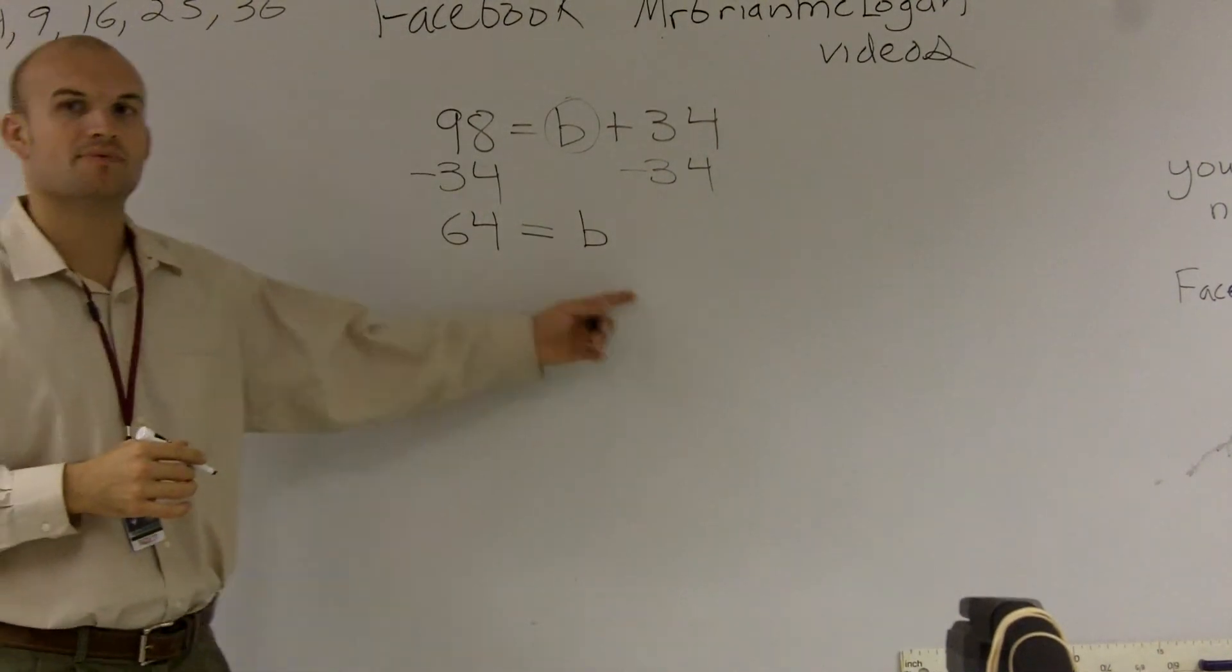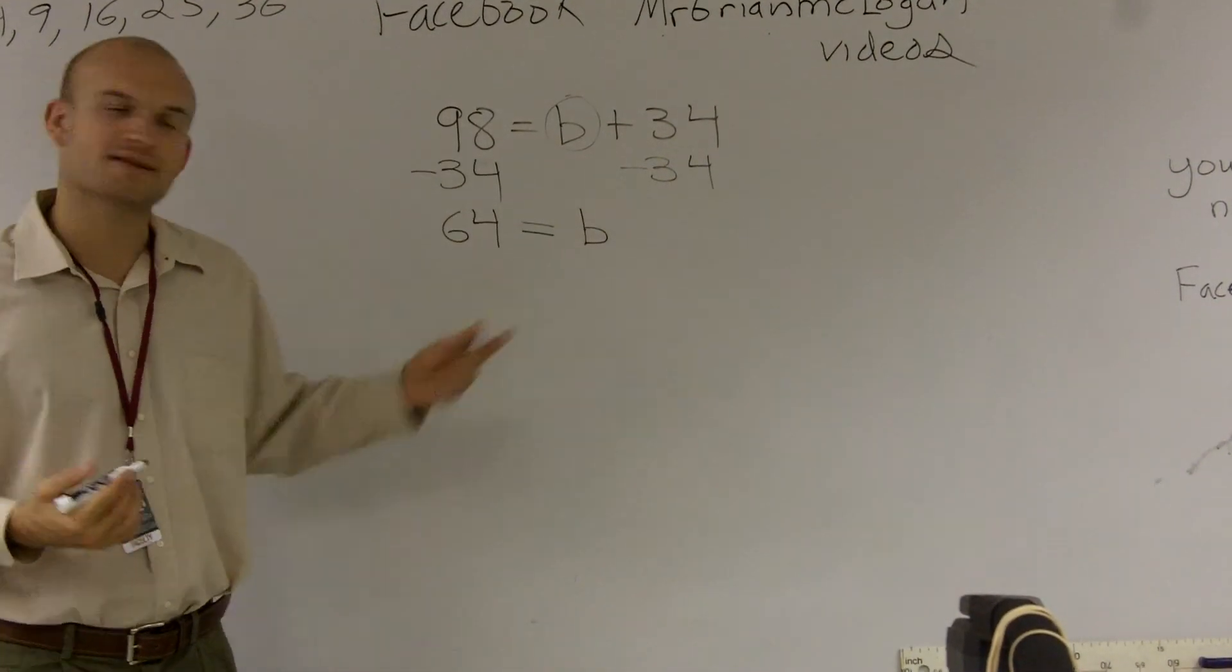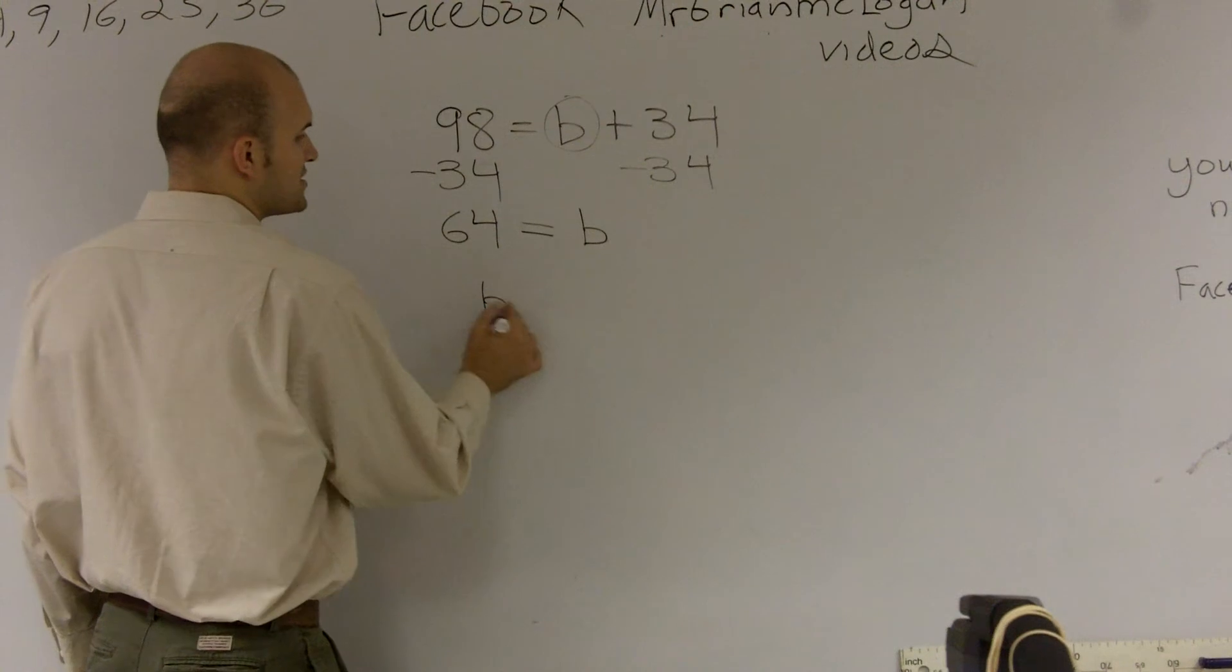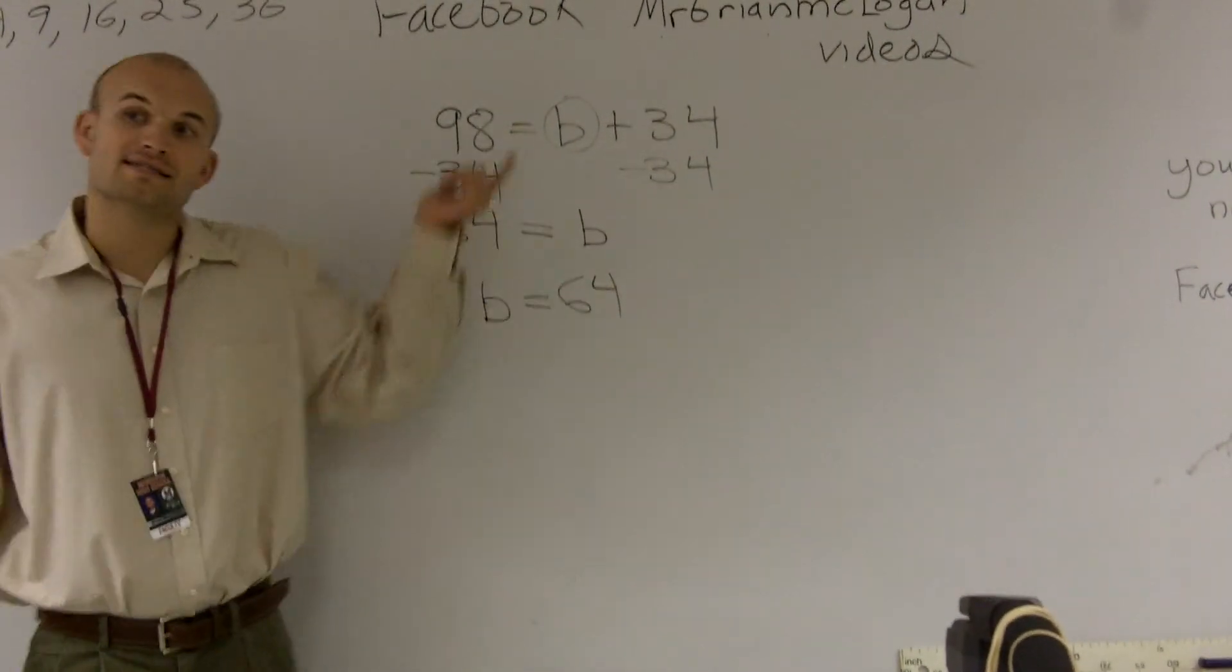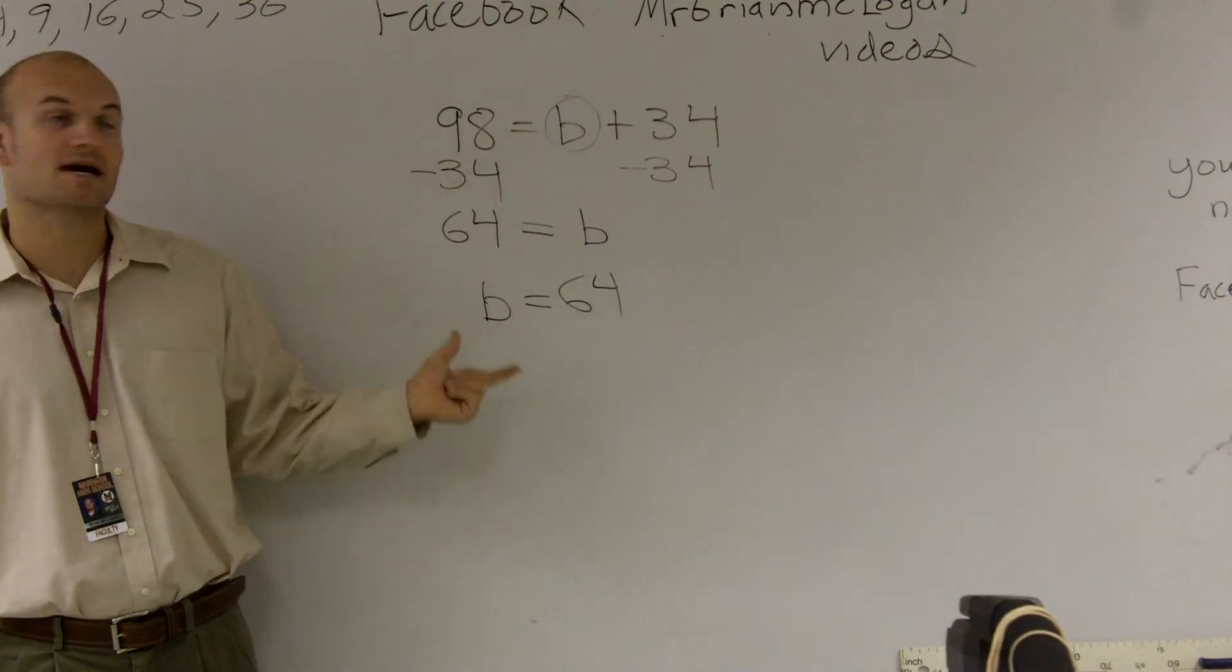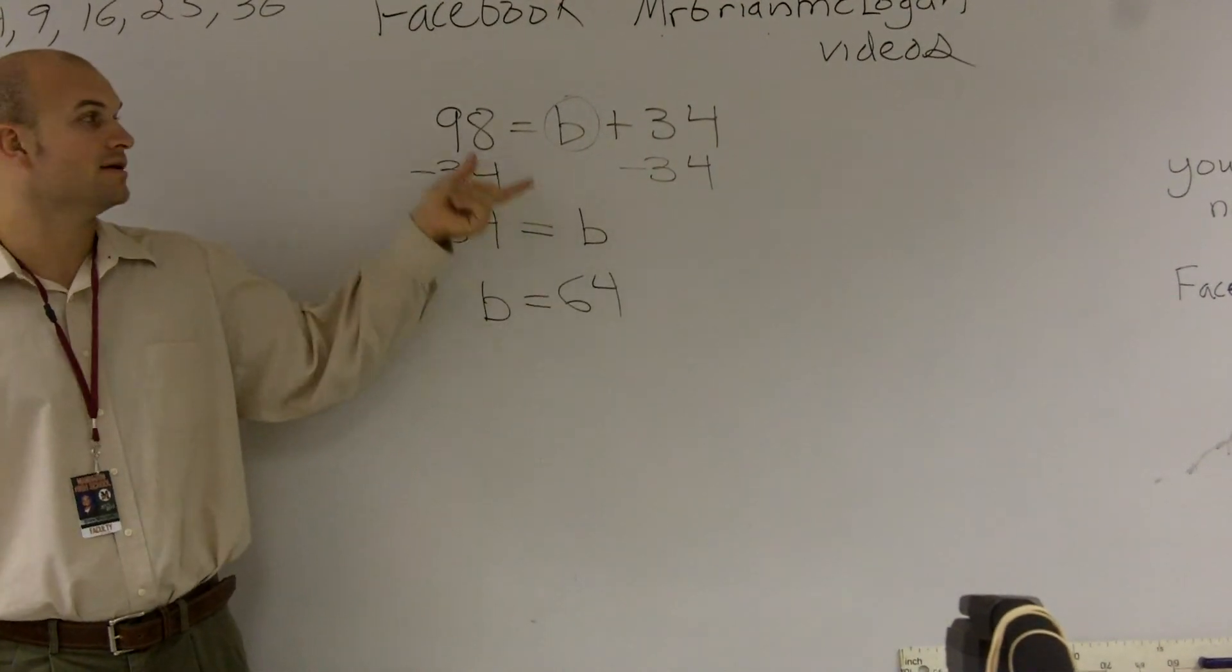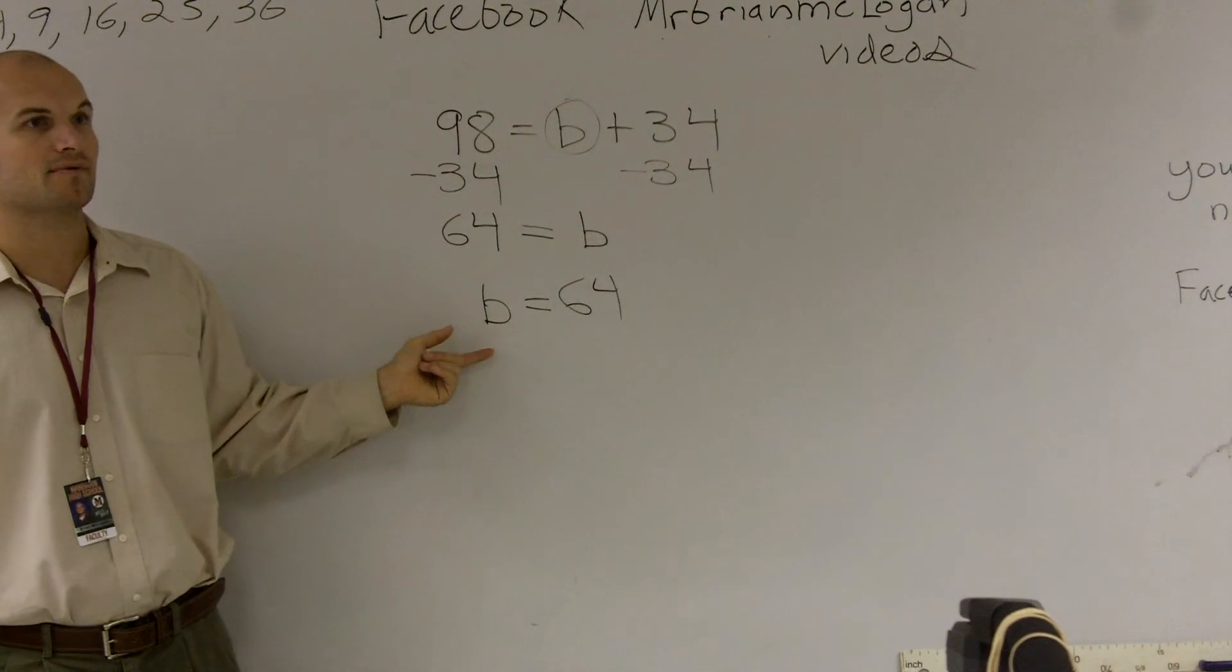So 64 equals b. A lot of times, though, we like to write the variable in front of it. So we just rearrange it when we write b is equal to 64. So that is how I'd like you to solve it step by step by using the properties of equality, by using the inverse operations to solve your problem.